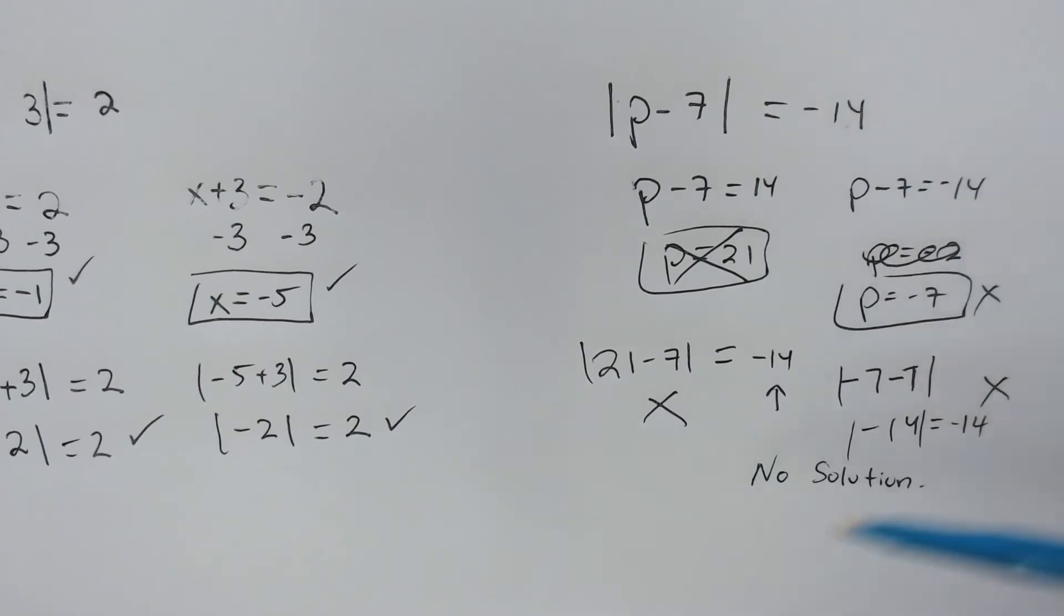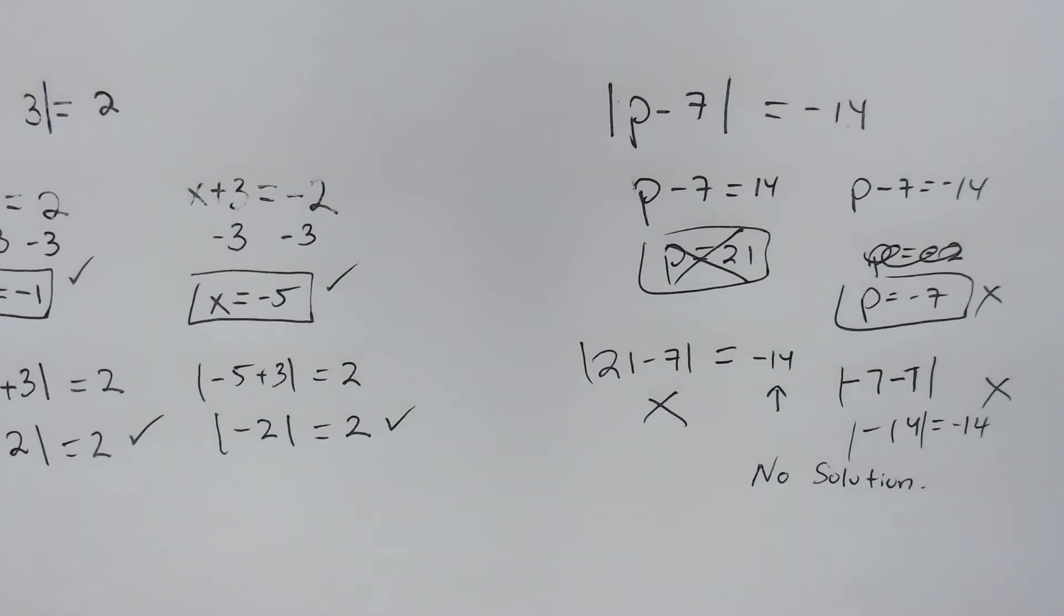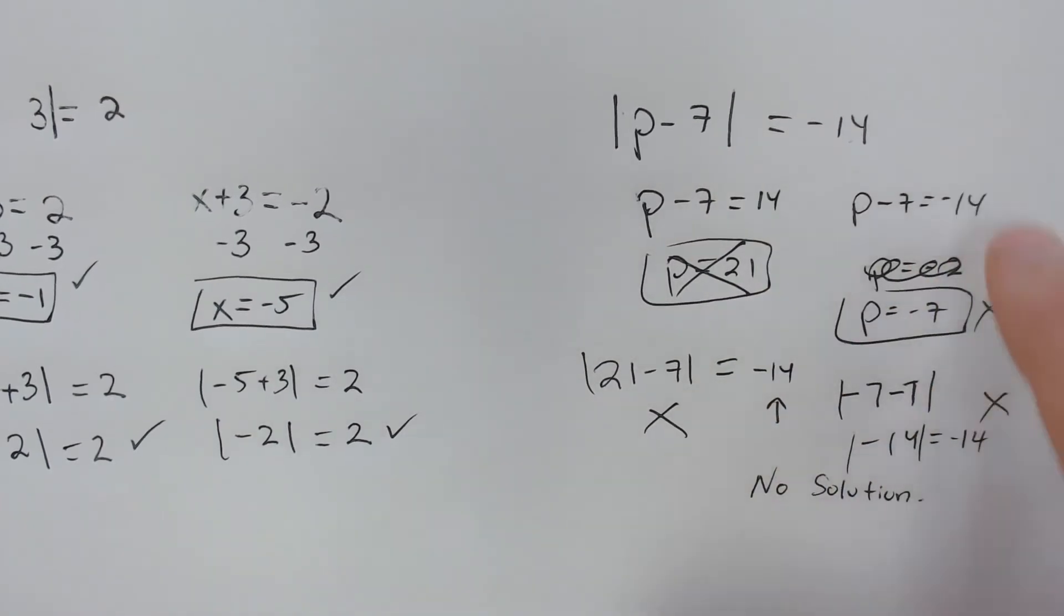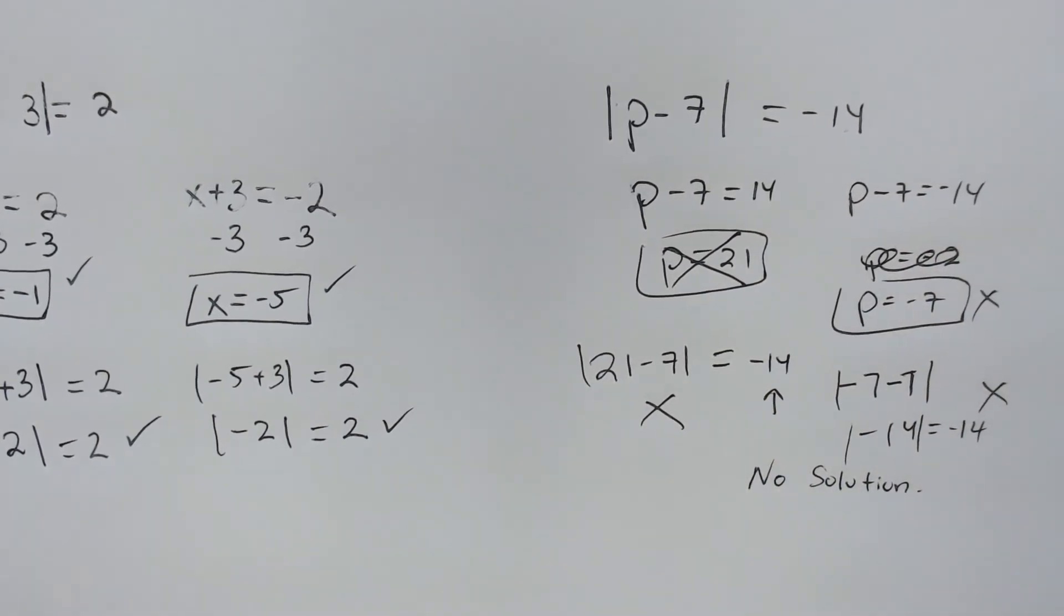This would be considered a no solution type of problem. But again, from the beginning, we could have known that because it equaled a negative number. Absolute values can never equal a negative number. If you knew that and you're thinking right from the beginning, rather than just being a robot and going through the problems, you can save yourself a lot of time.